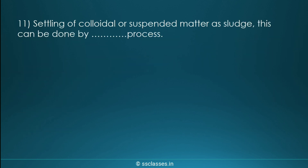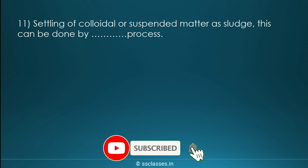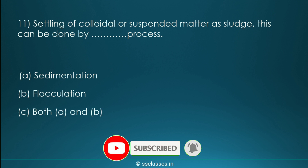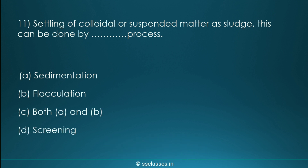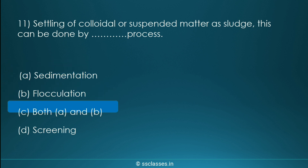Question eleven: settling of colloidal or suspended matter as sludge can be done by which process? Options are various processes. The correct option is both sedimentation and flocculation — these are the methods used for settling colloidal as well as suspended matter as sludge.